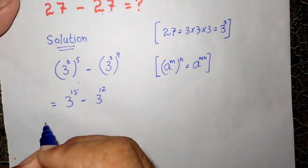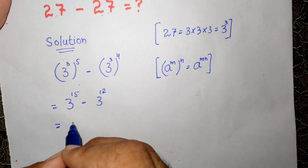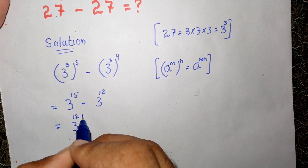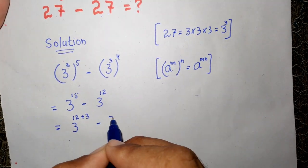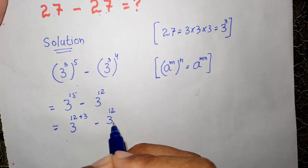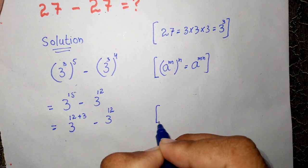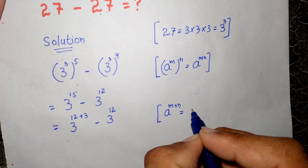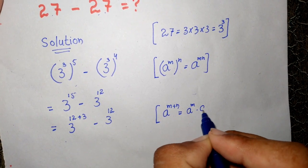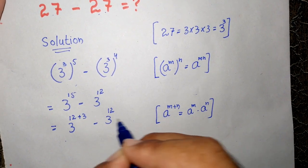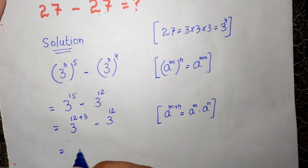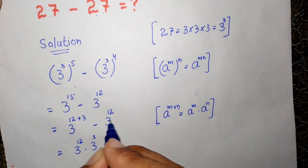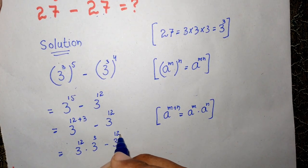Now again, we know that 3 to the power of 15 can also be written as 3 to the power of 12 plus 3, minus 3 to the power of 12. Here we also know that a to the power of m plus n is equal to a to the power of m times a to the power of n. So this will become 3 to the power of 12 times 3 to the power of 3, minus 3 to the power of 12.